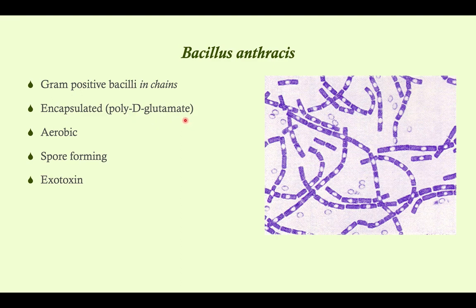They could ask you about that specifically — give you a classical picture of a patient with anthrax, either cutaneous or pulmonary, and then ask you what one of the virulence factors is. They'll give you three different capsule compositions: polysaccharide, hyaluronic acid, poly-D-glutamate — and poly-D-glutamate is the answer right here. So that's something that could be an easy point on the exam.